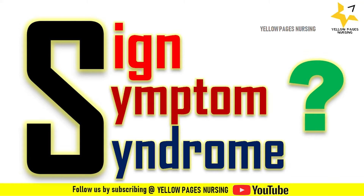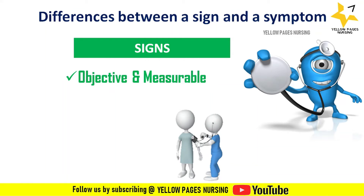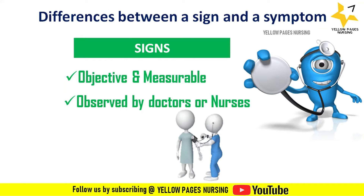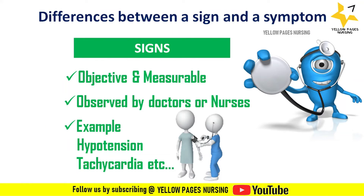A sign is something which is objective and measurable — they are visible and can be quantified and verified. A sign is the effect of a health problem that can be observed by someone else, such as healthcare workers like doctors and nurses. Examples include high temperature, rapid pulse rate, and low blood pressure.